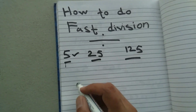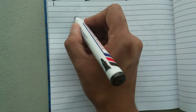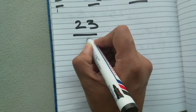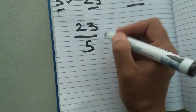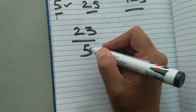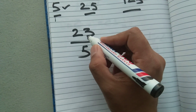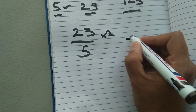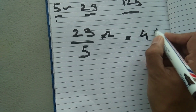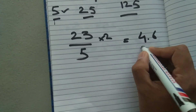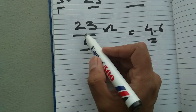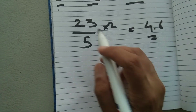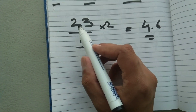Let's start with 5. For example, let's say you have the number 23 and you want to divide it by 5. Instead of going through the whole division process, simply multiply 23 by 2. The answer will be 46, and then put the decimal point here — so the answer is 4.6.